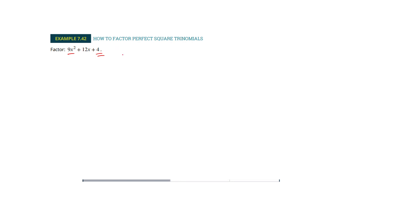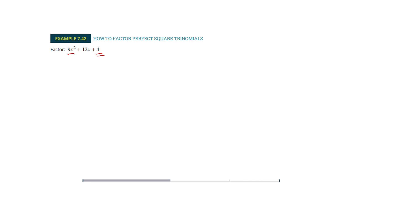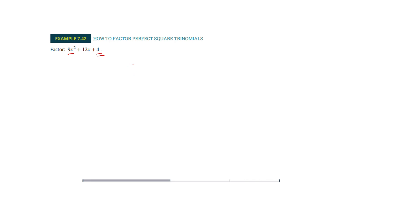I'm going to make two of these and write down those square roots twice. The square root of the front is 3x — I'm going to write that twice. The square root of the back is 4. Now we've got this middle term, and it's going to take the sign of that middle term.